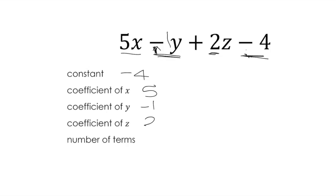Coefficient of z is nice and easy. That's 2. And the number of terms, well, separate terms are separated by minuses and pluses. So we've got 1, 2, 3, 4 terms. Nice and easy.